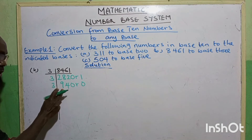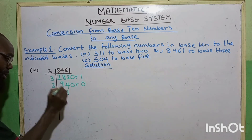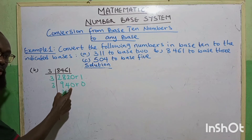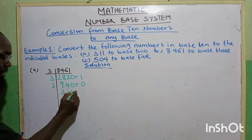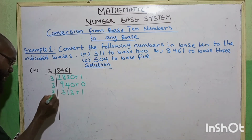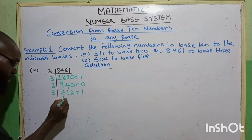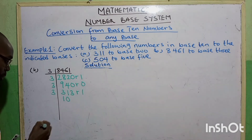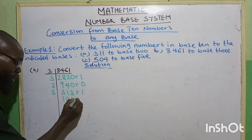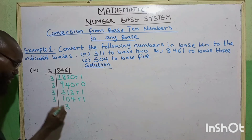Then 3 again. 3 goes into 9, we have 3. 3 goes into 4, we have 1 — remainder 1. Put it here, making 10. 3 goes into 10, we have 3 — that is 3 times 3 is 9, remainder 1. Then 3 goes into 3, we have 1. 3 goes into 1 — impossible, 0. Put it here, making 13. 3 goes into 13, we have 4 — that is 12, remainder 1. 3 again: 3 goes into 10, we have 3 — remainder 1.